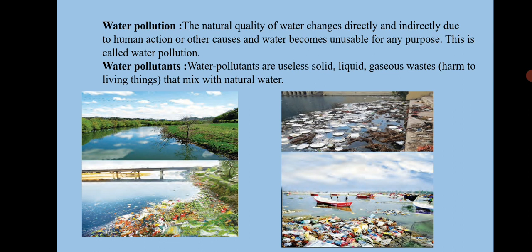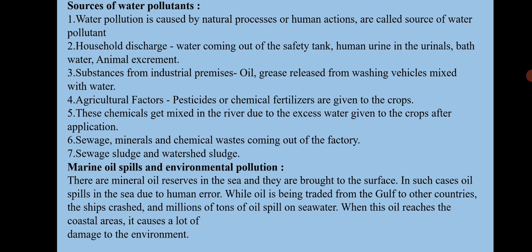There are various pollutants present in the water which make it polluted. Pollutants are useless solid, liquid, or gaseous waste substances that get mixed with natural water. Water pollution is caused either by natural processes or by human actions. There are two sources of water pollutants: one is natural, and the other is human.